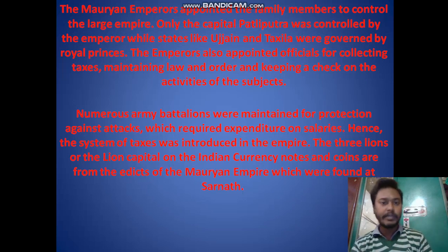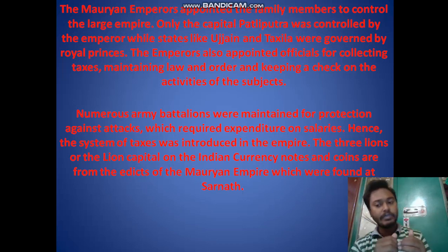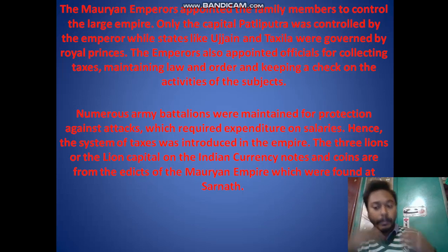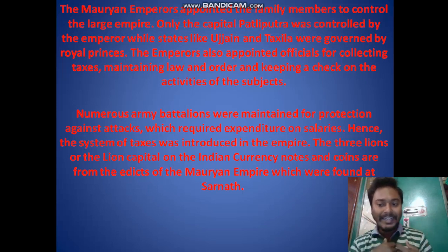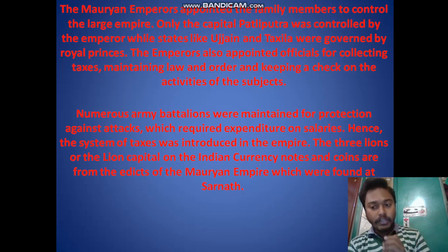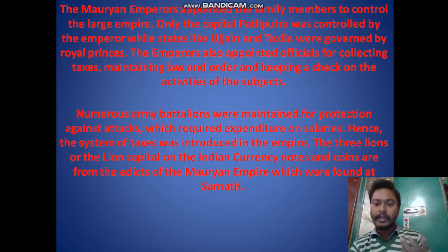The emperor also appointed officials for collecting taxes, maintaining law and order, and keeping a check on the activities of the subjects — these are the features of an empire. Numerous army battalions were maintained for protection, which required expenditure and salaries, hence the system of taxes was introduced. Our Indian national emblem — the three lions or Lion Capital seen on currency notes and coins — was established by Ashoka at Sarnath during the Mauryan Empire, so our national emblem originates from this period.